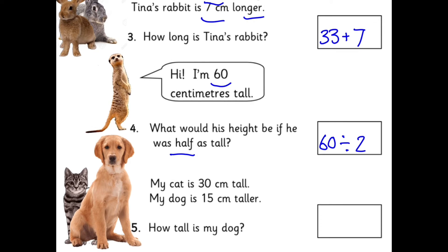My cat is 30 centimetres tall. My dog is 15 centimetres taller. How tall is the dog? So that's an adding one: 30 add 15.